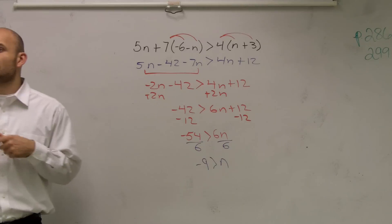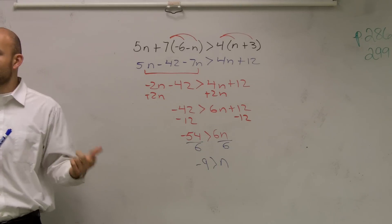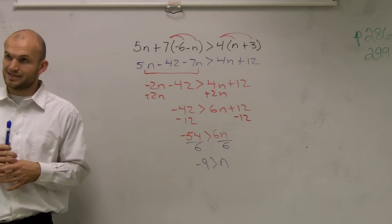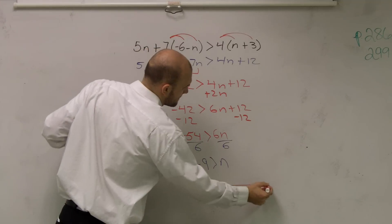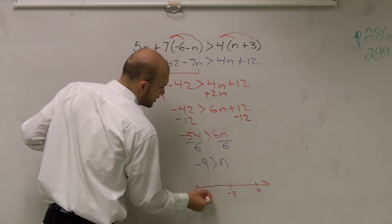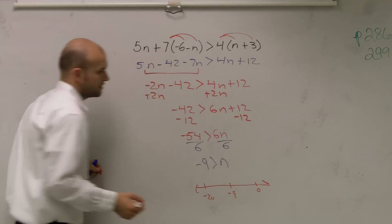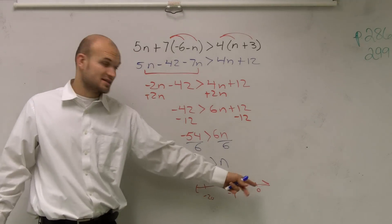So what numbers are greater than negative 9? Well, that'd be like negative 8, negative 7, negative 6, right? Zero, all the positive numbers. So if you're going to draw a number line, and here was negative 9, and here was 0, and this was like negative 20, you know that a positive number, or any number to the right, is going to make this inequality true.